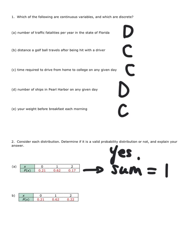The bottom example, 0.21 plus 0.62, that's 0.83 plus 0.22 does not equal 1. In fact, it goes over, so this one's no.